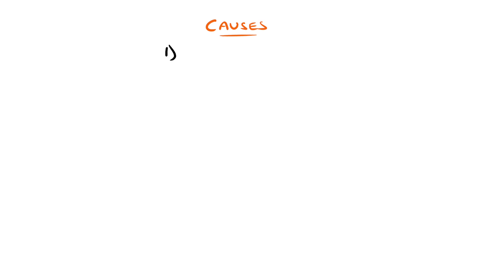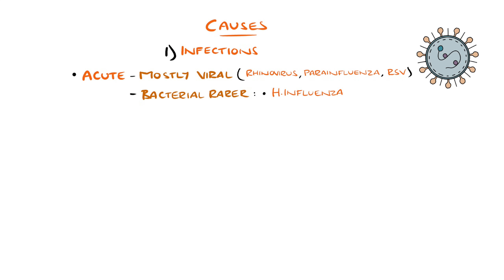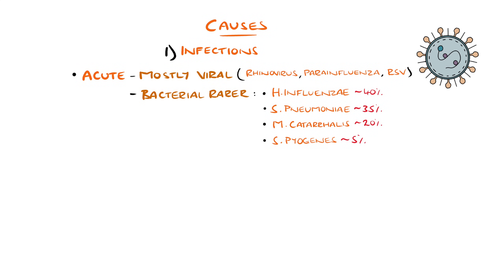The majority of acute cases are caused by viral infections, such as rhinovirus, parainfluenza, and respiratory syncytial virus. Duration of symptoms above 10 days is more suggestive of a bacterial infection. In acute cases, the most common bacteria include Haemophilus influenzae in around 40%, Streptococcus pneumoniae in 35%, Moraxella catarrhalis in around 20%, and beta-haemolytic streptococci, such as Strep pyogenes, in around 5%.